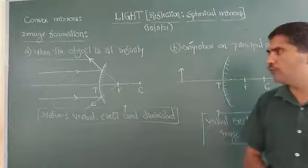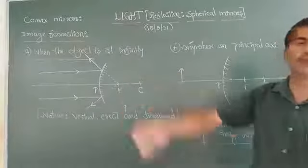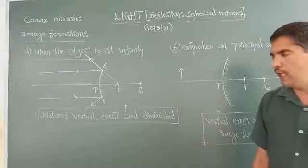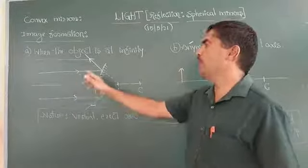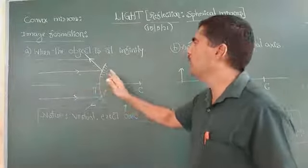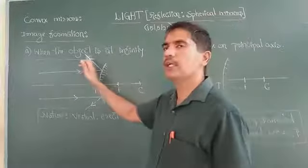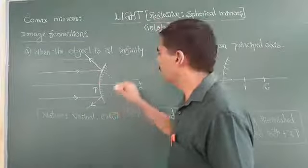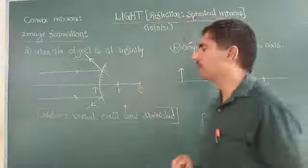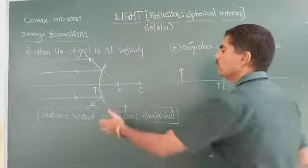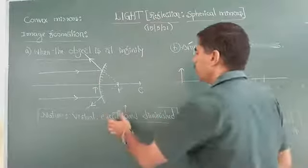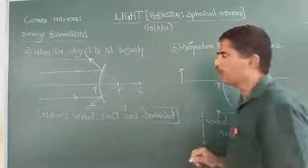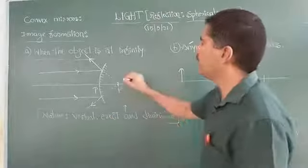Now, the same diagram can be used here. When the object is at infinity, parallel light rays coming from the distant object diverge and they appear to diverge from focus. So at focus, you get a virtual, erect, and very small or diminished image.